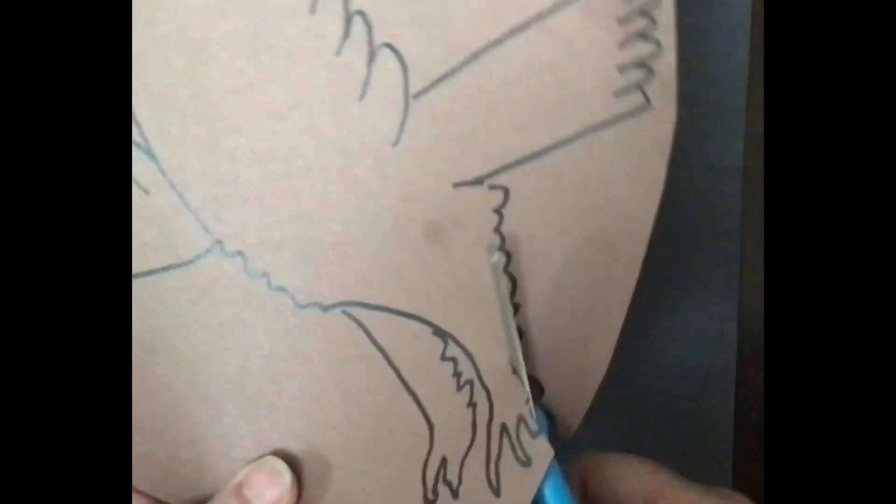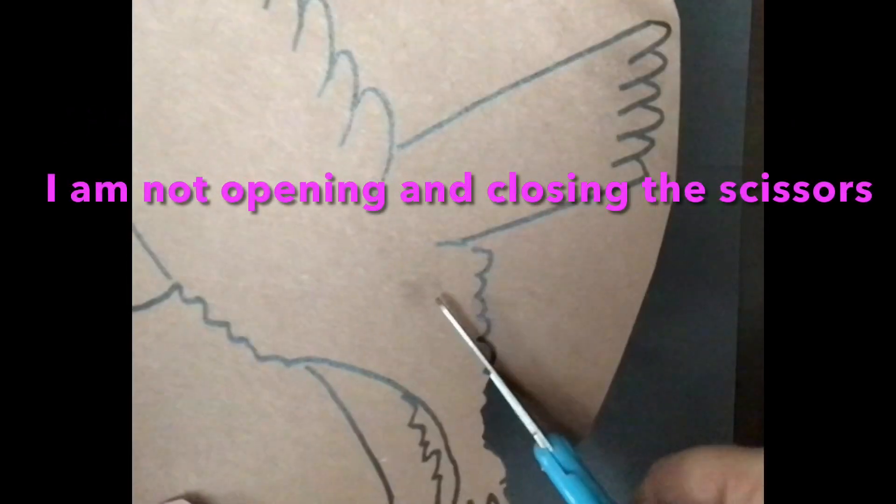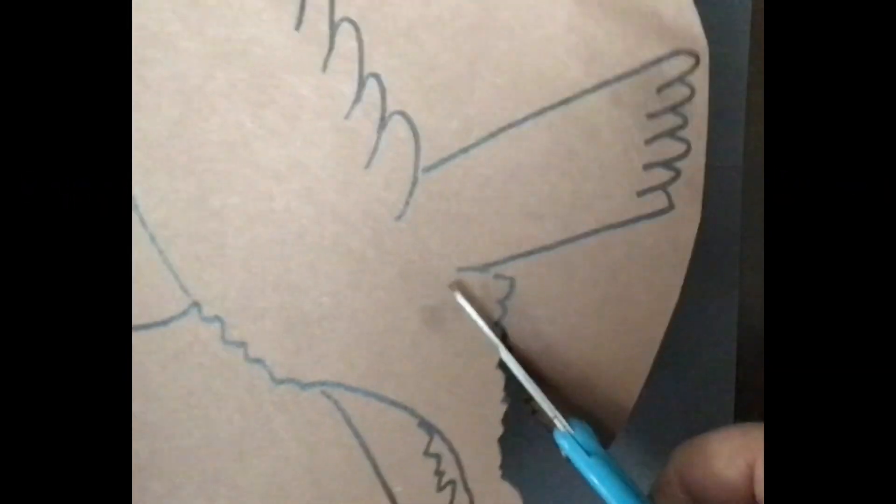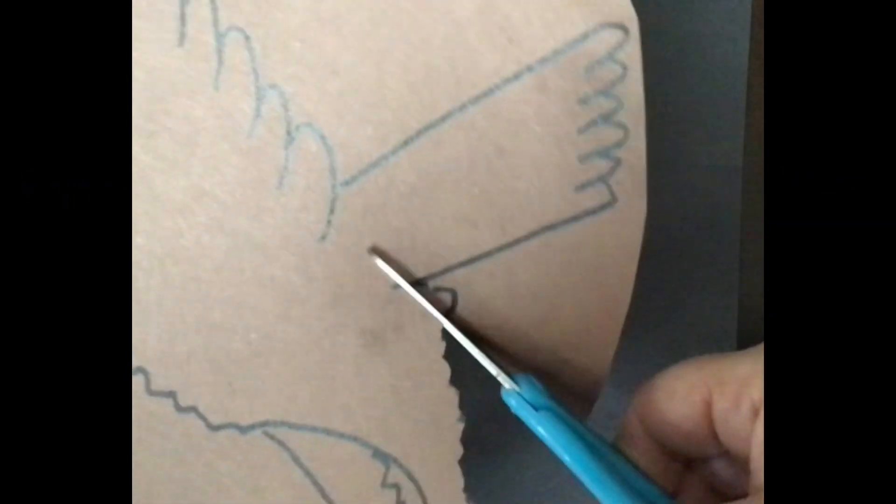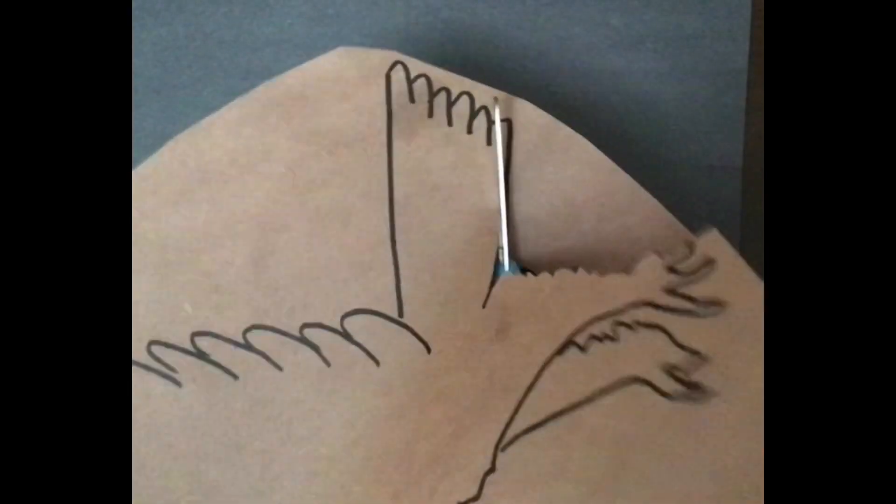Look at this. This is kind of fancy. I'm wiggling the scissors back and forth. I'm not opening and closing them like an alligator's mouth. I'm just wiggling them back and forth. Can you try to do that?